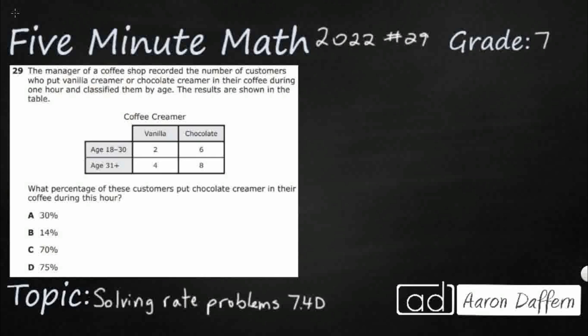So we have the manager of a coffee shop recording the number of customers who put creamer, either vanilla or chocolate, during one hour and classified them by age. Not sure why this manager would care which age group had more chocolate or vanilla, but that's what the manager did. So percentage is what we're looking for. You see all our answer selections are percentages. Of these customers put chocolate creamer in their coffee during this hour.